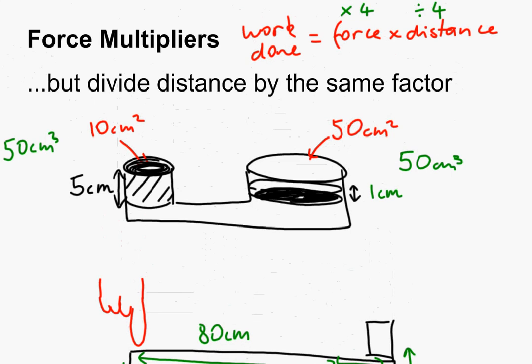Energy is being conserved, and the trade-off you get for multiplying force is by losing distance traveled. Hope that's been helpful and clears up what force multipliers are and how they work.